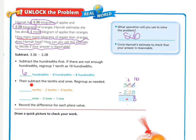The next step is to subtract the tenths and the ones, regrouping as needed. I have two minus two, which is zero. And then three minus two, which is one. Two-tenths minus two-tenths equals zero, and three ones minus two ones leaves us with one.